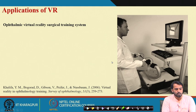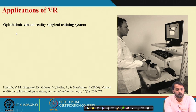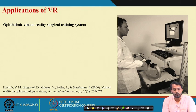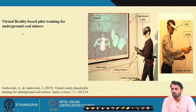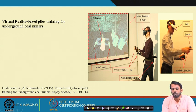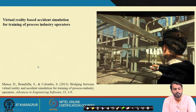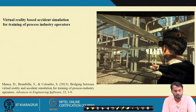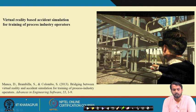Here are some application examples. First is the ophthalmic virtual reality surgical training system, published in the Survey of Ophthalmology. Second is virtual reality-based pilot training for underground coal miners, published in Safety Science in 2015 — here, mine operators are trained in a virtual environment on how to operate inside an underground coal mine. Third is VR-based accident simulation for training of process industry operators, published in Advanced Engineering Software in 2013, where operators learn standard operating procedures for interacting with different devices in process industries.